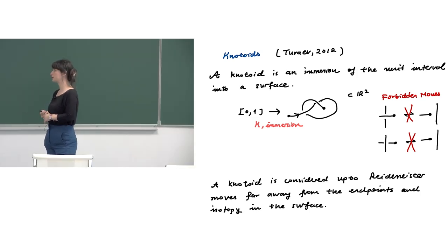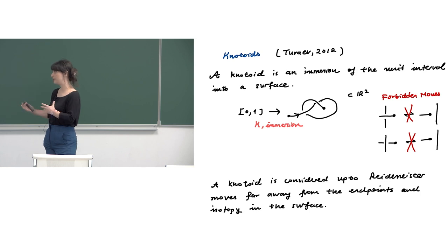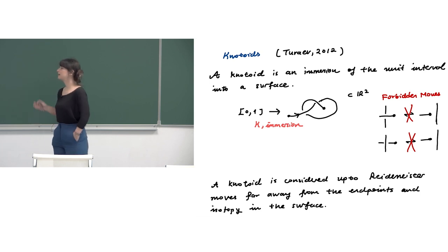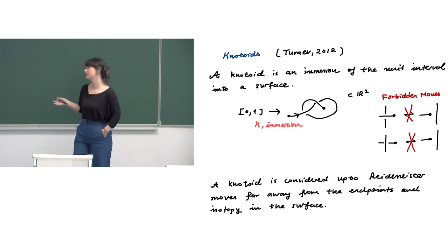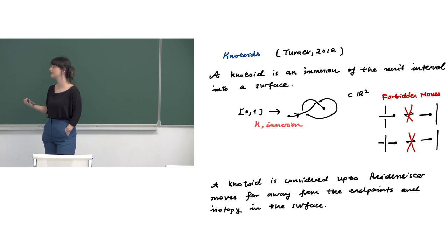When we forbid these two moves and allow only the classical Reidemeister moves taking place away from the endpoints, we have the theory of knotoids in some surface — in the plane, the two-sphere, or some genus surface. All these theories may be different from each other, and in this talk we will mostly think about knotoids in the plane and in the two-sphere.